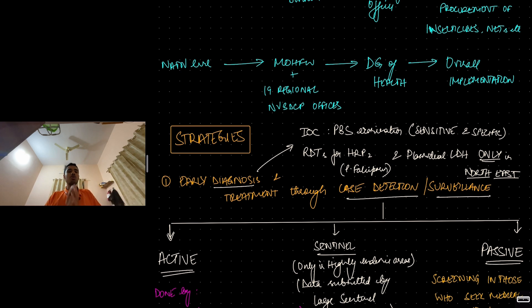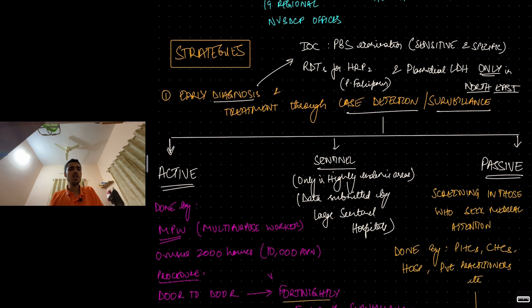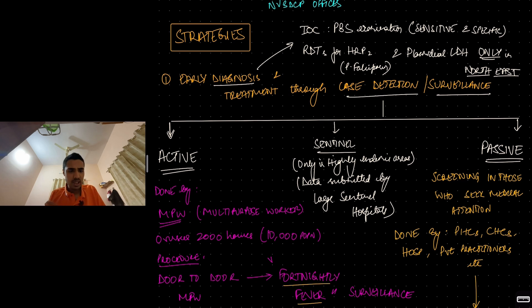Coming to the strategies. I am talking about malaria elimination here, mainly about malaria control in this video, because that is the most important. What is the first strategy? Early diagnosis and treatment through case detection or surveillance. Diagnosis. What is the diagnostic test of choice? It is peripheral blood smear examination. You take the thick smear and the thin smear. It is very sensitive, it is specific. Best is peripheral blood smear examination.